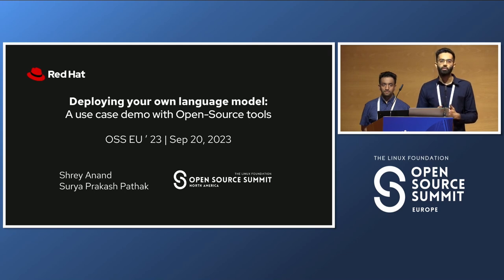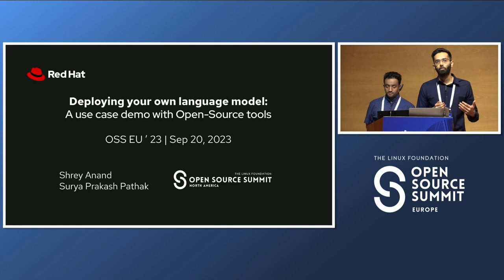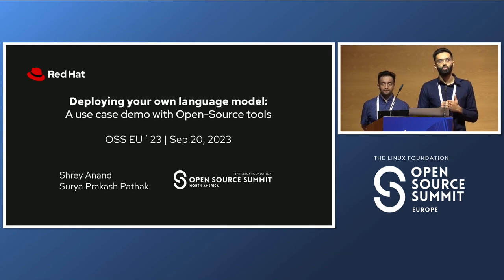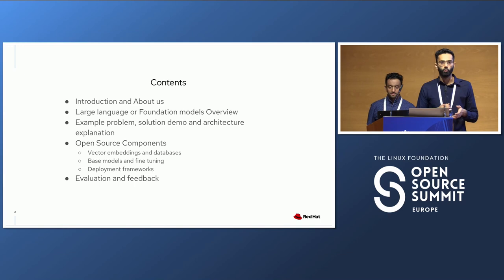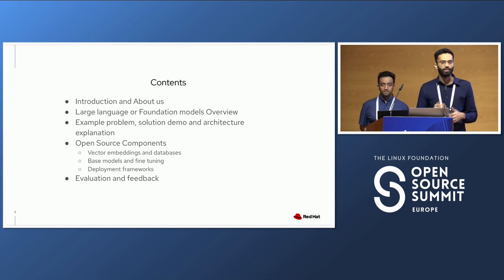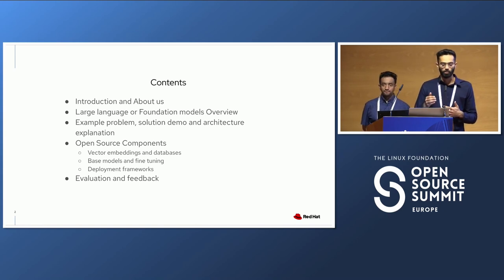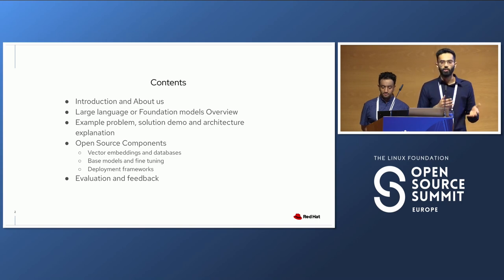All of our experiments are done on OpenShift, which is a Red Hat product. However, all of this can be replicated on a Kubernetes cluster — it's all cloud native, and you can use this for your own experiments or deploying in a production environment. We'll start with an overview of large language models, describe an example problem, give a solution demo, explain the architecture, and cover open source components such as vector embeddings, database-based models, fine-tuning, and deployment frameworks.